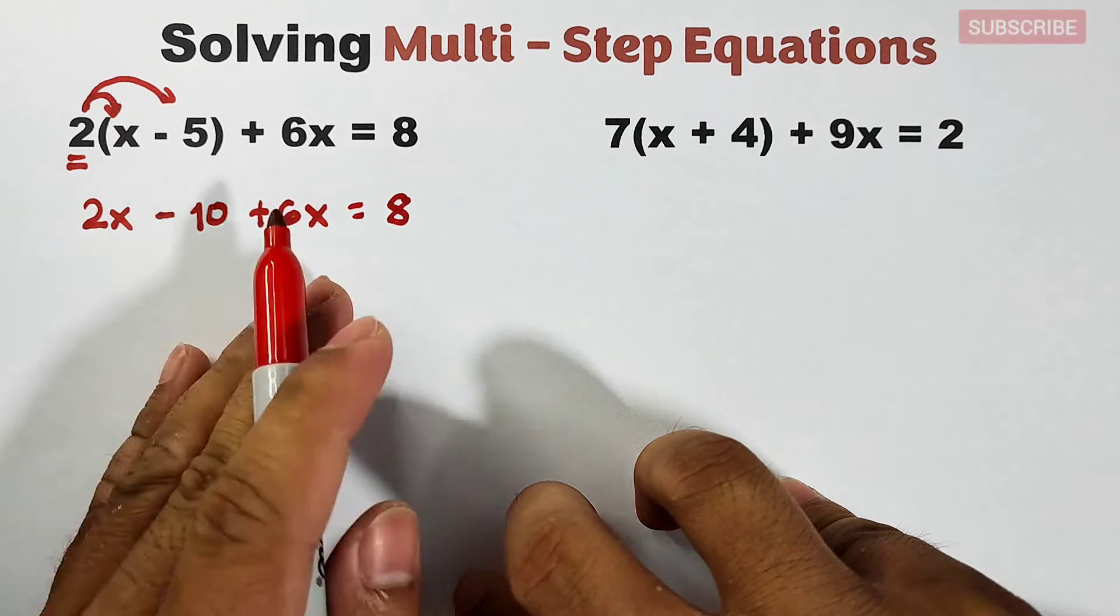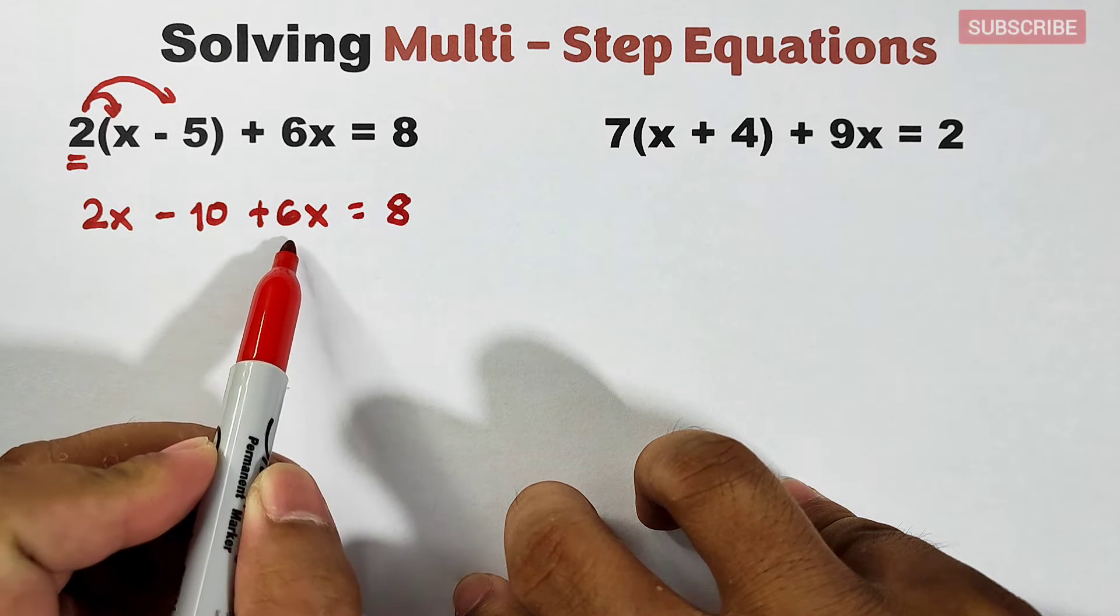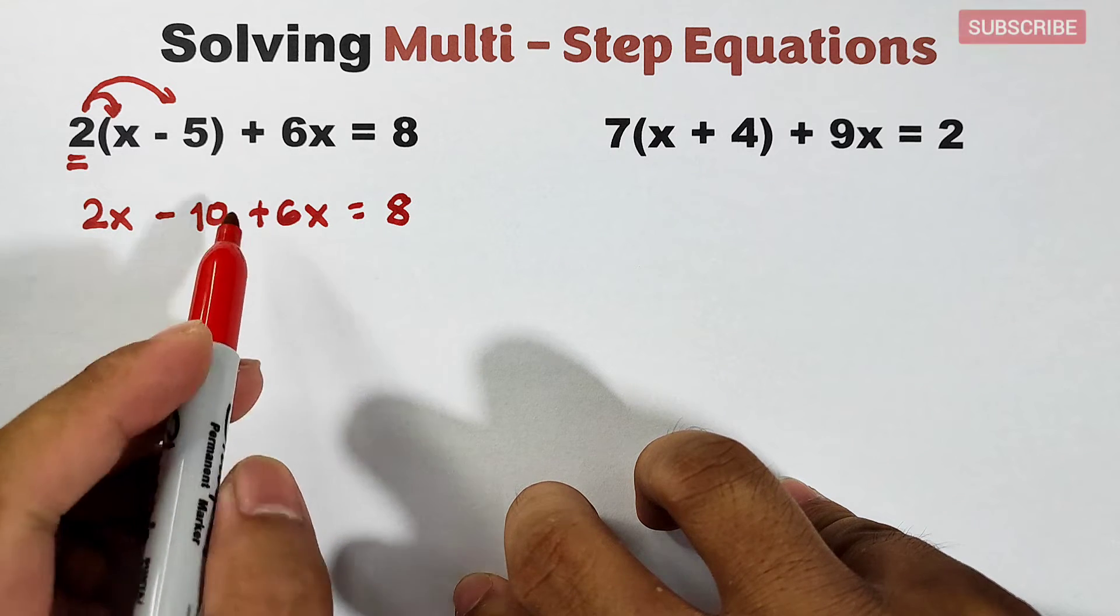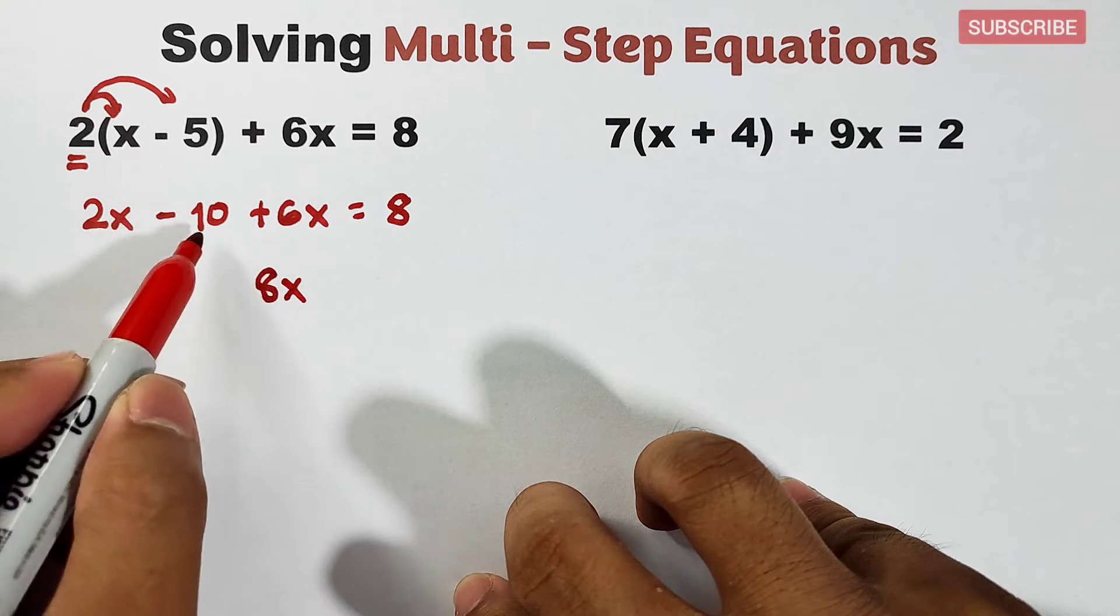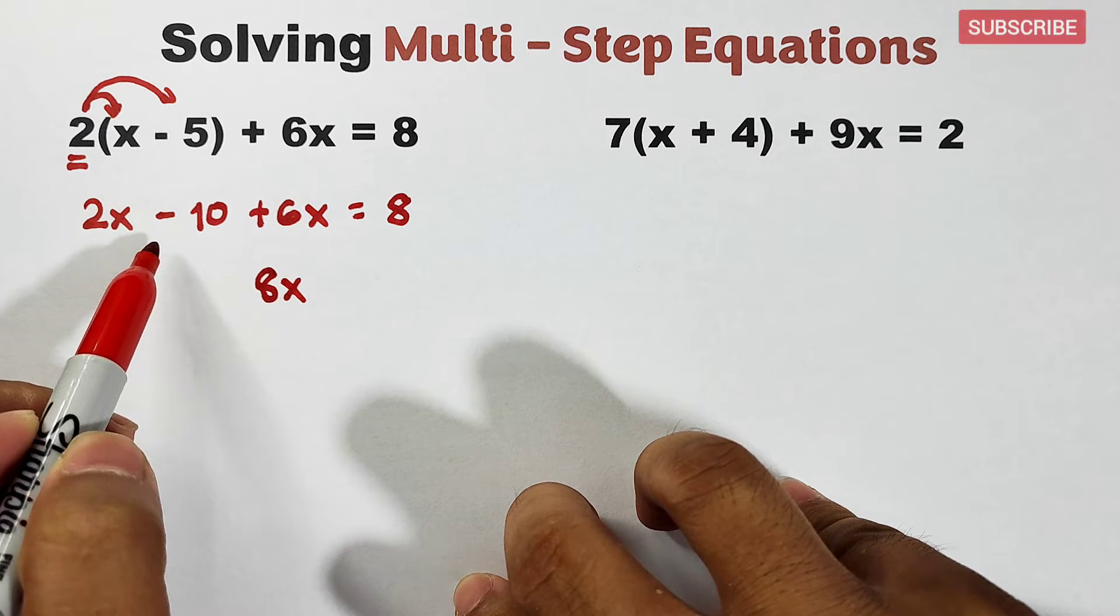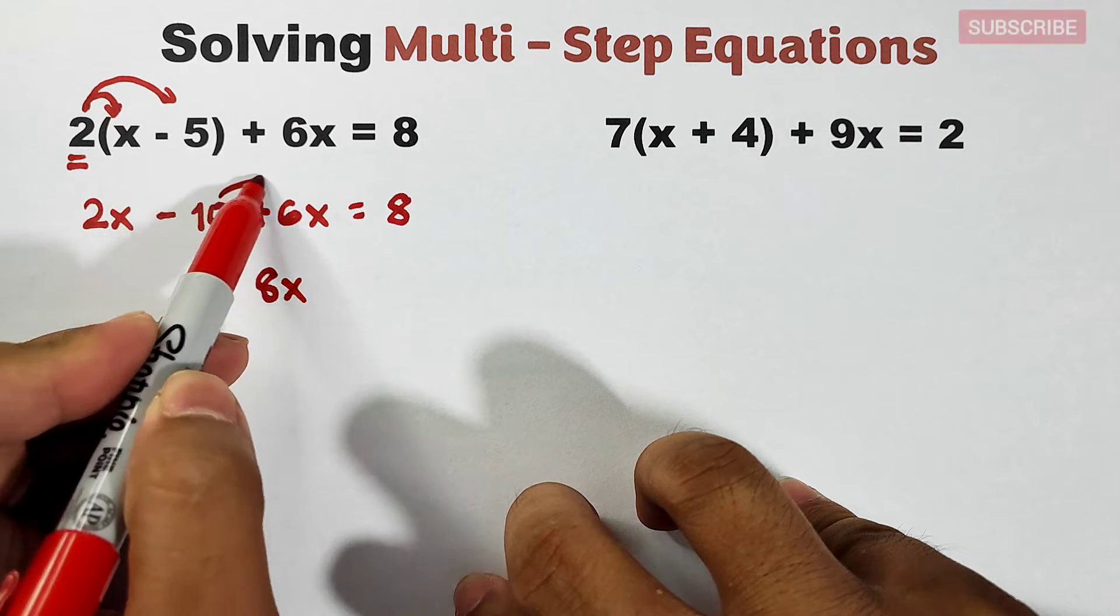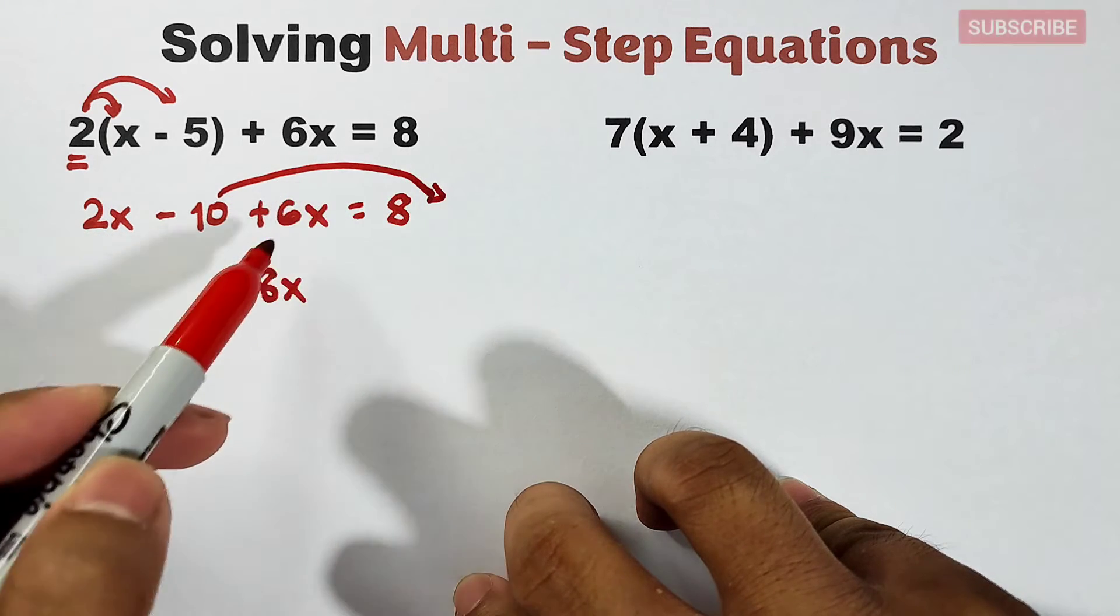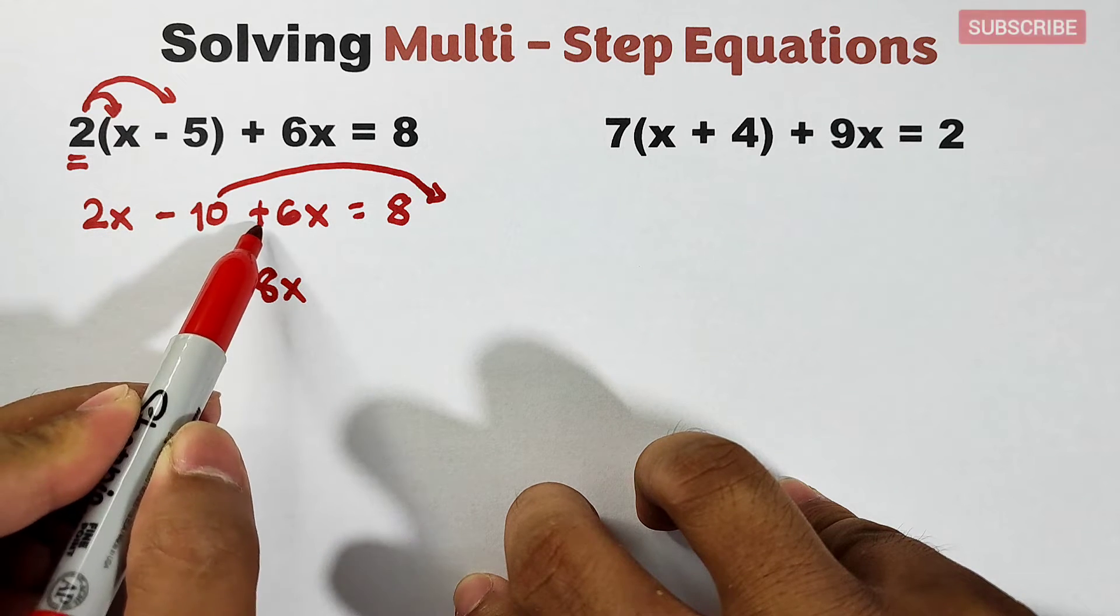Here on the left side of the equation we have 2x and 6x which will result in 8x. While this negative 10, we can add positive 10 here and on the other side, but in this video we will just transpose negative 10 to the other side of the equation.